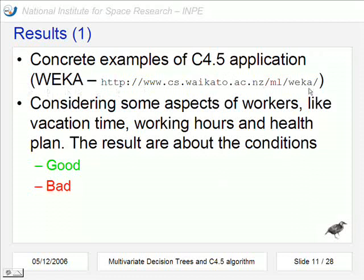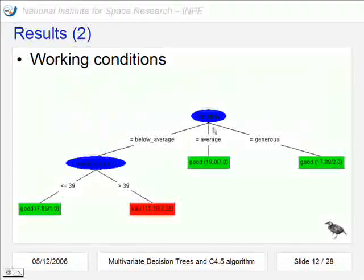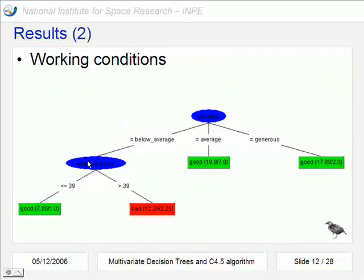Now some results of this algorithm that is available on software Weka. At this address you can download it free. We consider some aspects of workers like vacation time, working hours and health plan. And the result will be the conditions of the work, good or bad. Here is a simple example of a decision tree that just considers vacation and working hours. Here are the good cases and here are the bad cases that must have vacation below average and working hours higher than 39.